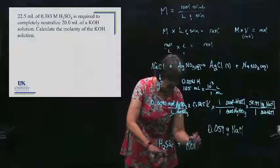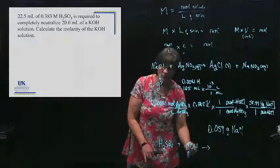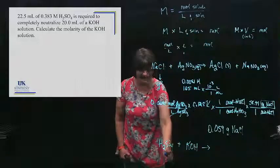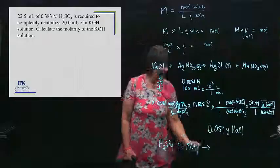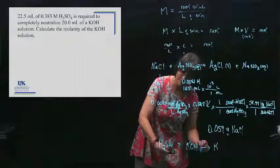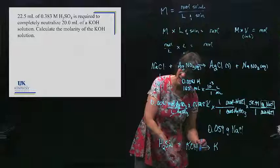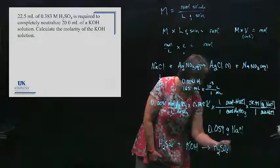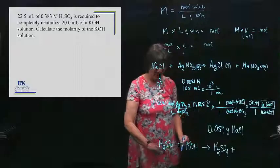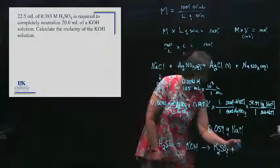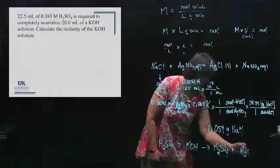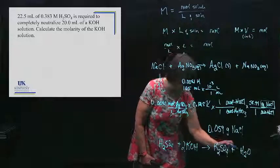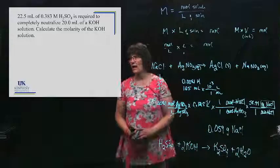H2SO4 is reacting with KOH. That's the acid. That's the base. It forms salt plus water. The salt comes from the cation of the base and the anion of the acid. The sulfate has a minus two charge. The K has a plus one, so it's going to have K2SO4, and the H gets together with the OH to make water, and I have to balance it. So I'm going to put a two here. There's two H's and two OH's. That makes two water. So there's my balanced reaction.